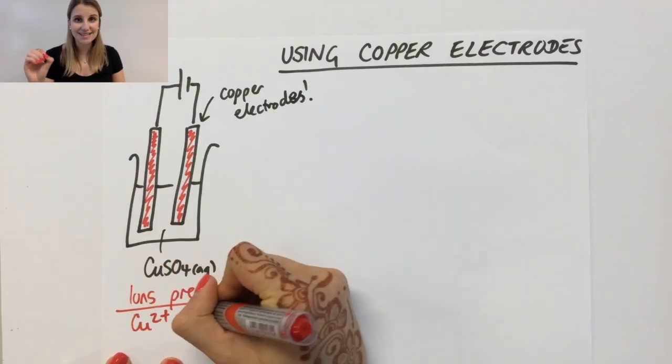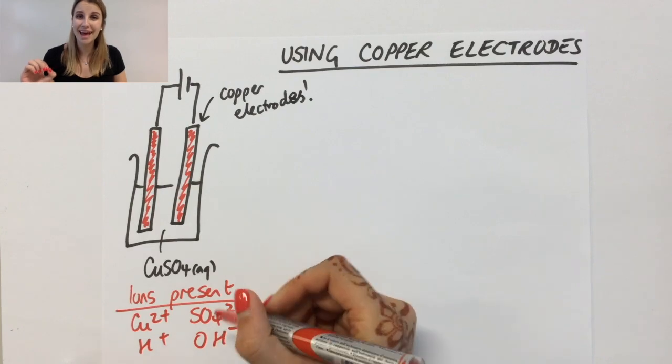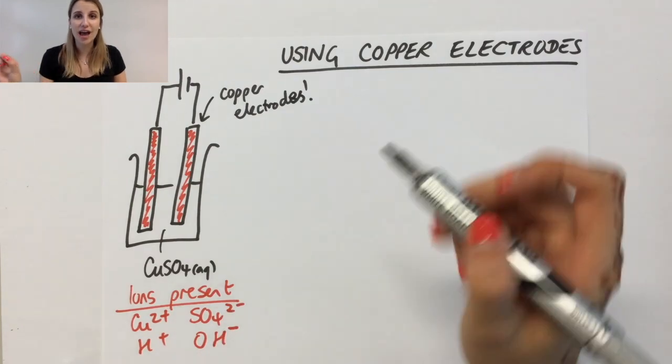The only difference is that now my electrodes are made of copper rather than graphite, which means they can get involved. Let's look at how that works.